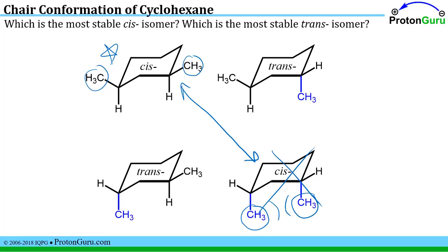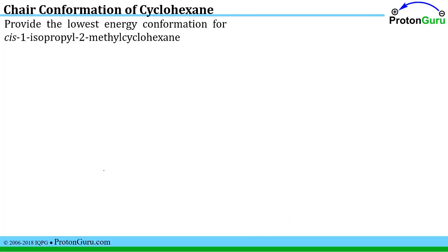How about these trans isomers? Well I have one gauche interaction here and one gauche interaction with this methyl group between this methyl group and the ring here, so they're both the same. So either one of these would be an example of the most stable trans isomer. And you're not always asked to draw all the possible conformations. And sometimes they just say well what's the lowest energy conformation and they'll give you one particular structure to solve for.